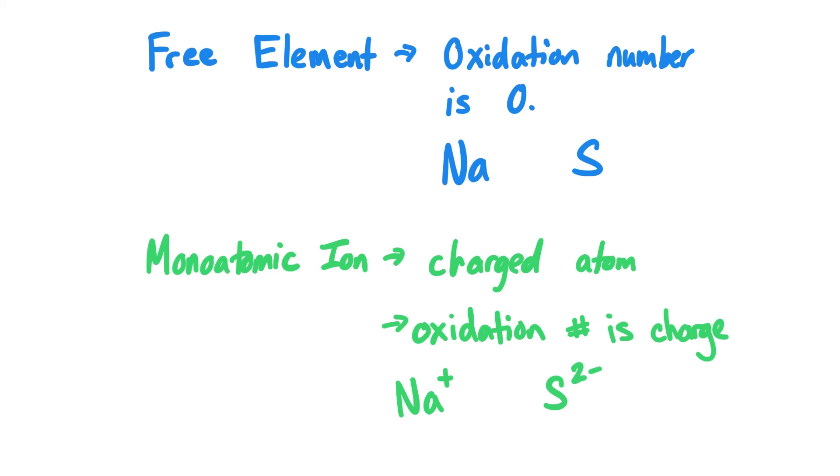So we can look at those two things and the big difference between a free element and a monoatomic ion is free elements have zero charge. Their oxidation number is zero. Monoatomic ions have a charge and their oxidation number is that specific charge.